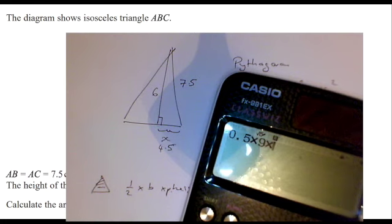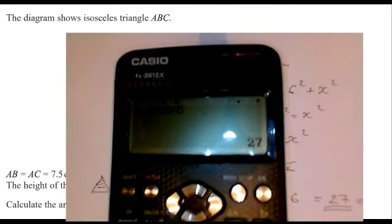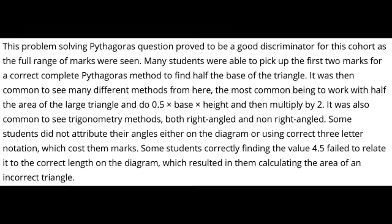So half times by the base times by the height does indeed equal 27, and that's our answer.